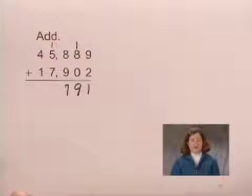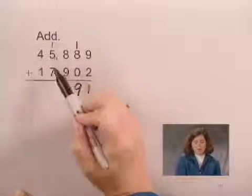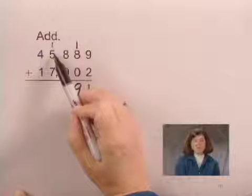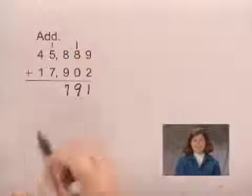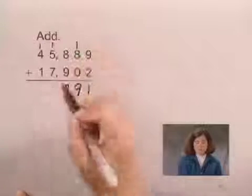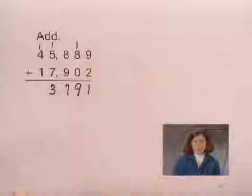To add the thousands, we add 1 plus 5 plus 7. 1 plus 5 is 6. 6 plus 7 is 13. 13 thousands is 1 ten thousand and 3 thousands.